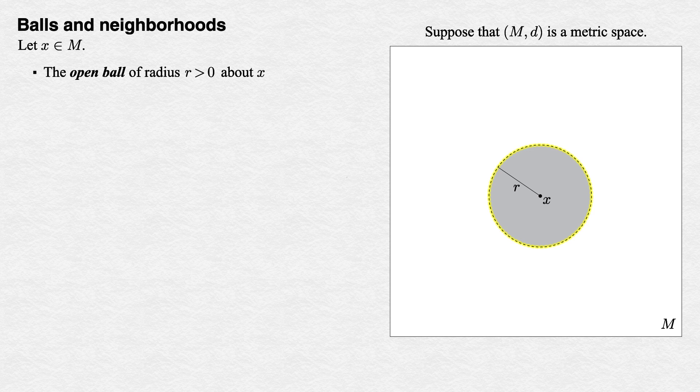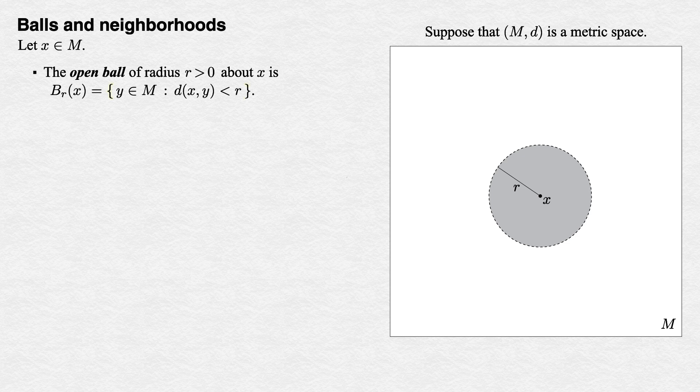We denote this open ball by B_r(x), and the symbolic definition of this subset of M is a literal translation of what we just said. B_r(x) is a set consisting of all elements of M whose distance from x is strictly less than r.